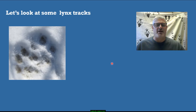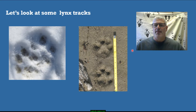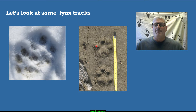Looking at some lynx tracks here in springtime — wet snow with dirt underneath — you can see the very clear teardrop-shaped toes, and then you can just make out a very small palm pad with a lot of space between the palm pad and the digits. That's a really important characteristic. In this summertime track in silt, you can barely see the heel pad, you see the small toes, and you can see the asymmetry in the track with the leading toe.